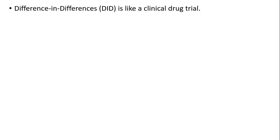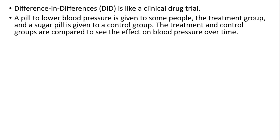Difference-in-differences is like a clinical drug trial. A pill to lower blood pressure is given to some people — the treatment group — and a placebo or sugar pill is given to a control group. The treatment and control groups are compared to see the effect on blood pressure over time.